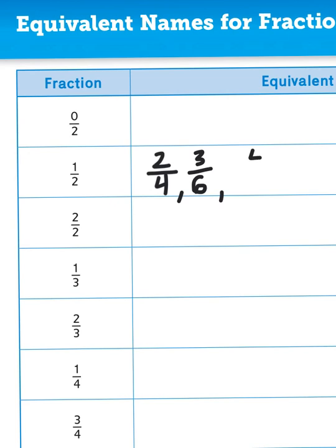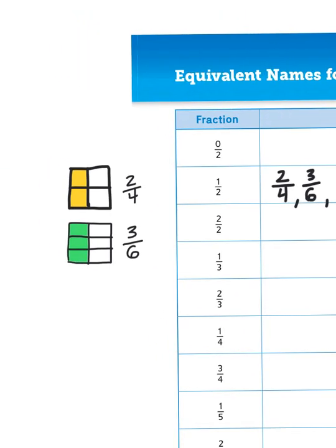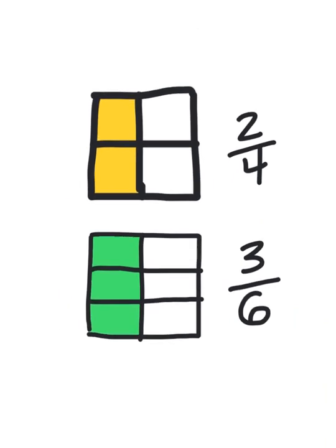So logically, our next equivalent fraction would have a 4 at the top. Now the bottom number, the denominator, that's a 2. So we would skip count or increase the denominator by 2: 2, 4, 6. If I skip count by 2's and follow that same pattern, my next equivalent fraction would be 4 eighths.